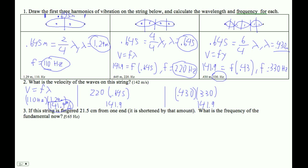Okay, let's do number three from this thing here. We need this stuff to do number three. So if we shorten it by 21.5 centimeters, the new length is 64.5 minus 21.5, right? That's going to be 43.2.